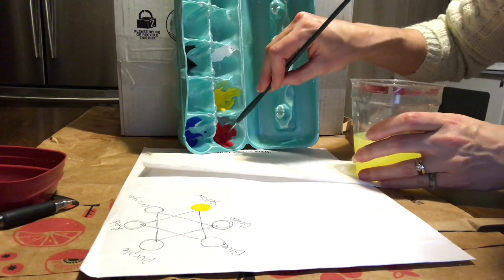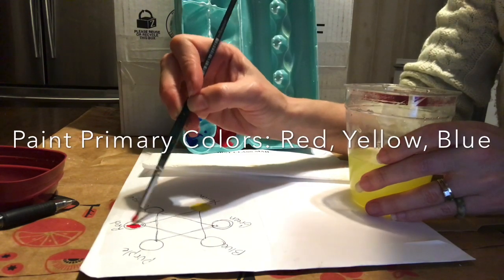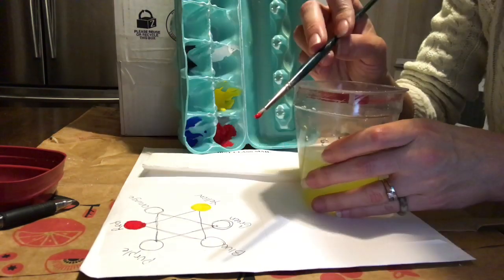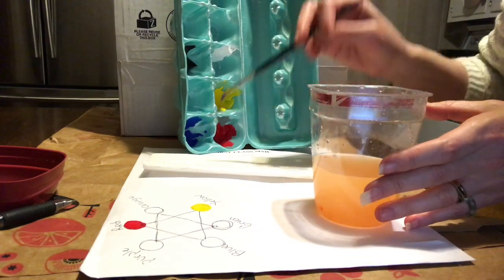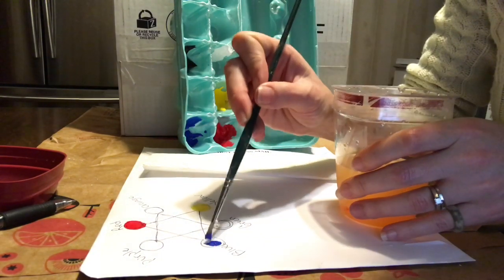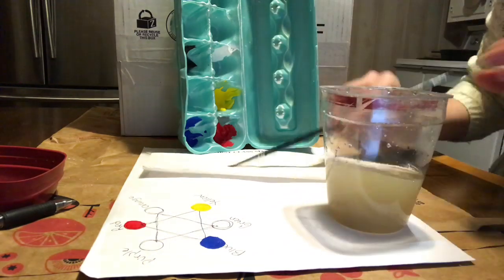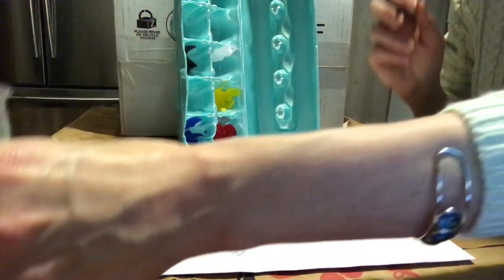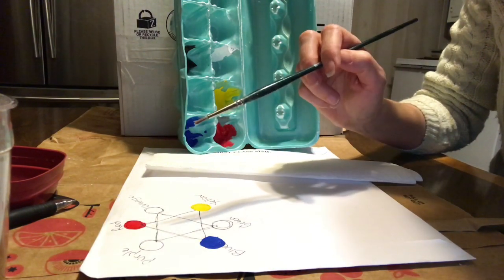Now I have a red, yellow, and blue. Those are our primary colors. Now we're going to move on to the secondary colors.